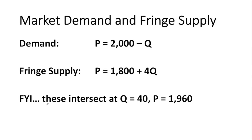As promised, here is some information we can use to find the equilibrium and solve the model. Demand is given by P equals 2,000 minus Q. The fringe supply is given by P equals 1,800 plus 4Q. As an FYI, these two curves intersect at a quantity of 40 and a price of $1,960.